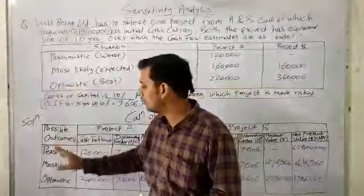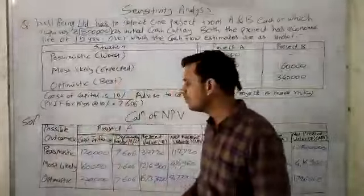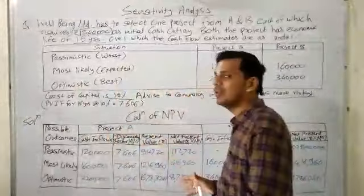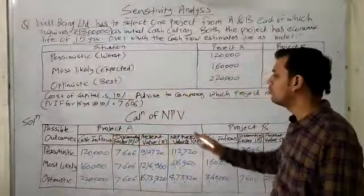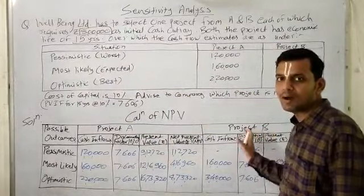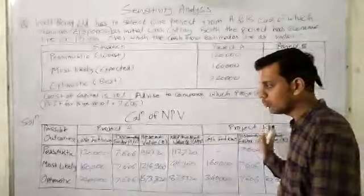We have three possible outcomes: pessimistic, most likely, and optimistic. We have taken all three situations. For cash flows for Project A, as discussed in the last video, we divide the table into two parts.